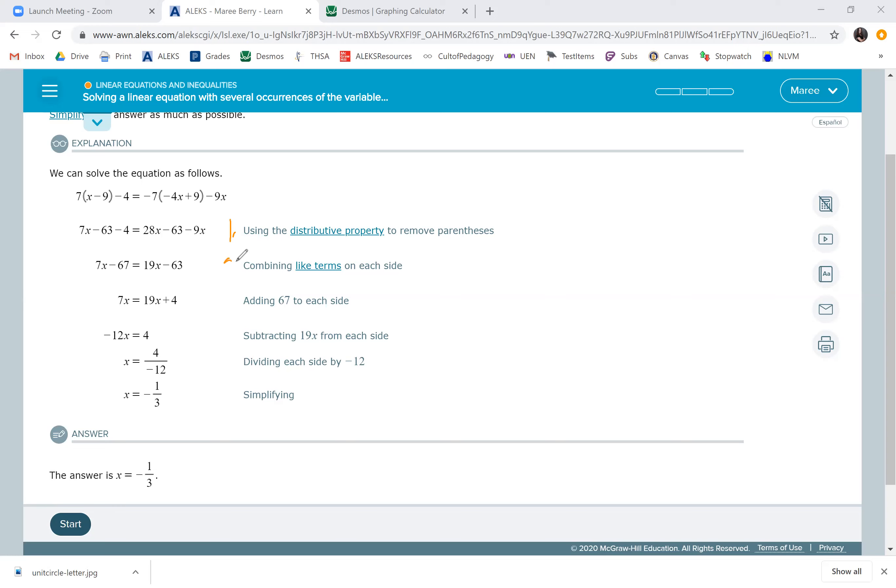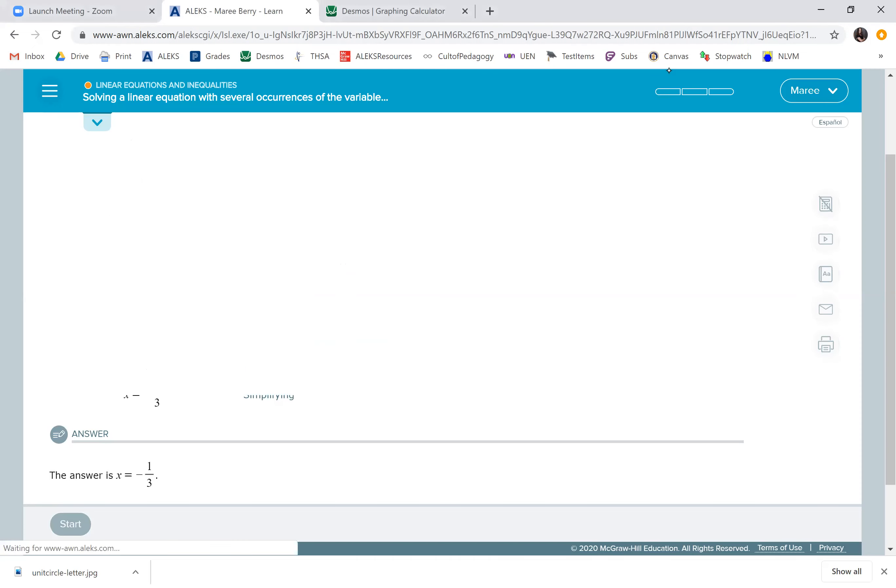The next step is to combine like terms. In this case, they combined 28x and minus 9x to get 19x, and negative 63 minus 4 to get minus 67. Then you solve the equation like you normally do. They added 67, then subtracted 19x to get negative 12x, and divided by negative 12 to get negative one-third. We're going to do some practice, but always do distributive property first, then combine like terms, then solve like you normally will.